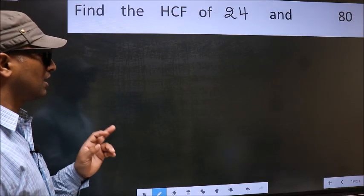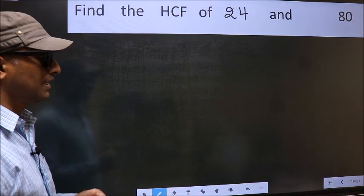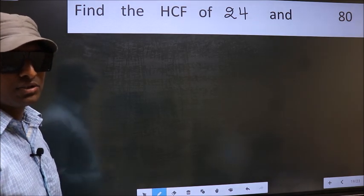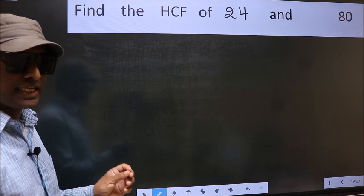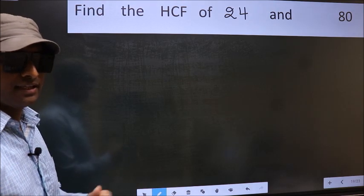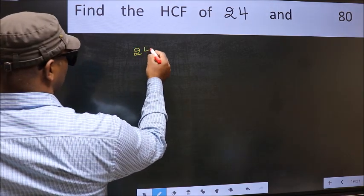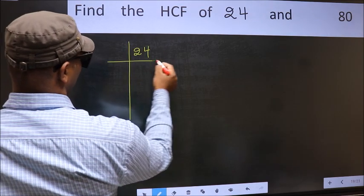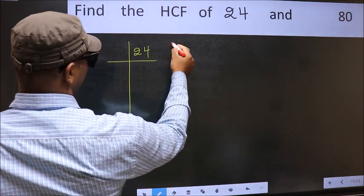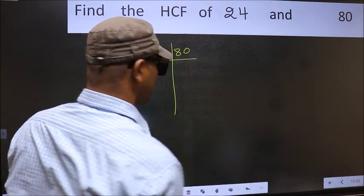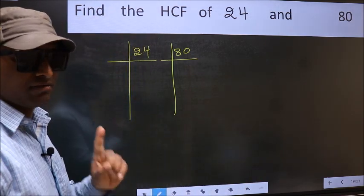Find the HCF of 24 and 80. To find the HCF, we should do the prime factorization of each number separately. What I mean is 24, 80. This is your step 1.